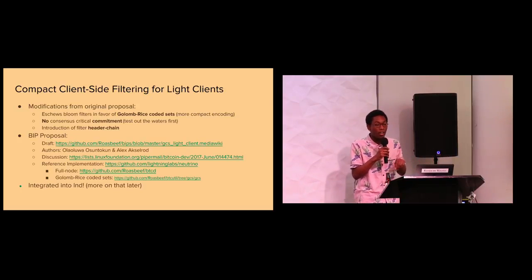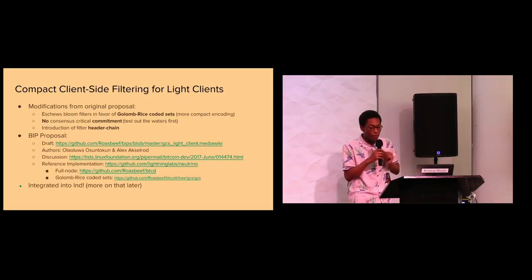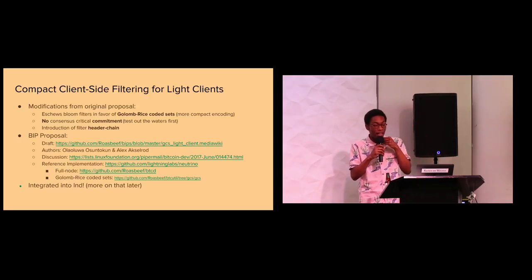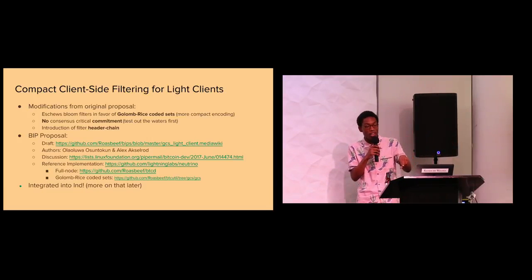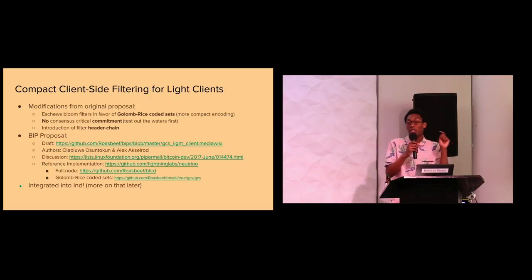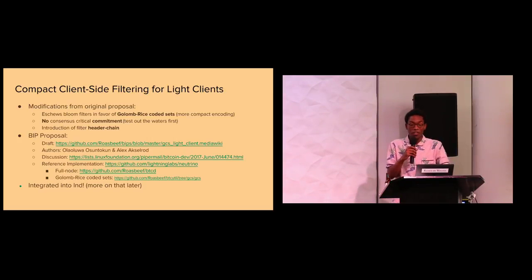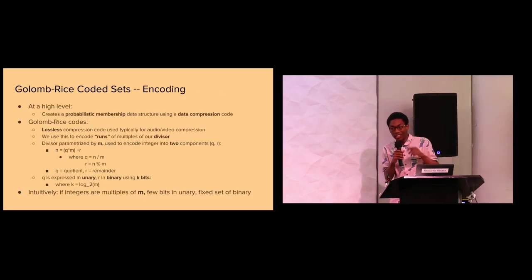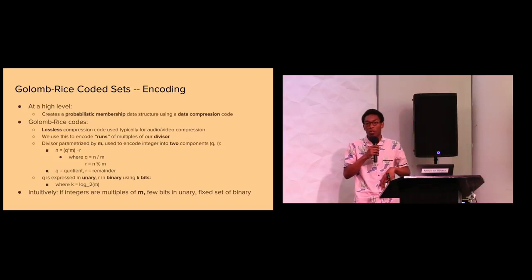We also introduced something called a header chain, because we're not actually having a consensus commitment — this header chain lets light clients verify the information they've received. So we have a BIP proposal if you want to comment on it on the mailing list, authored by me and one of our other engineers, Alex, and we also have a reference implementation called Neutrino. I've implemented the necessary P2P extensions in BTCD, including indexing, and it's also integrated into LND.